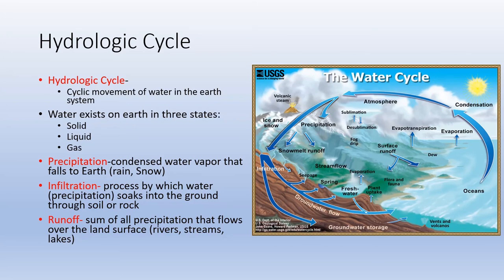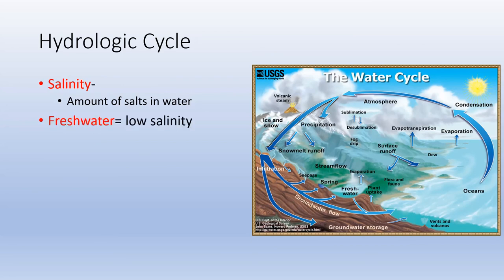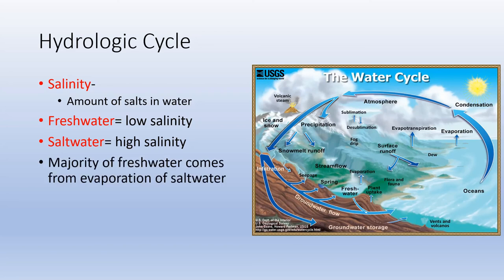Salinity is the amount of salt in water. Fresh water has low salinity; salt water has high salinity. The majority of our fresh water comes from evaporation of salt water from the ocean. When water evaporates, it leaves the salt behind — you don't get salt clouds or salt rain — so evaporation of ocean water is how we get most of our fresh water.